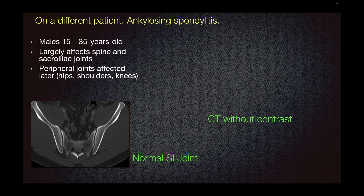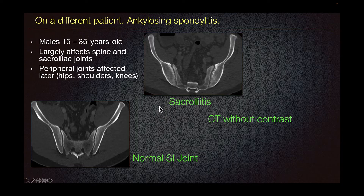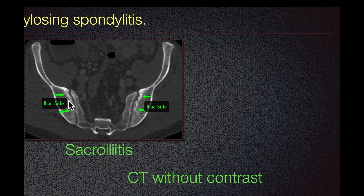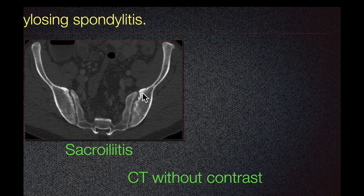Here is the normal sacroiliac joint with preserved joint space and no bone erosions. One of the earliest signs of ankylosing spondylitis is sacroiliitis. On CT, we see this irregularity predominantly at the iliac side of the sacroiliac joint bilaterally, consistent with erosions, which are typically seen in the acute phase of sacroiliitis.